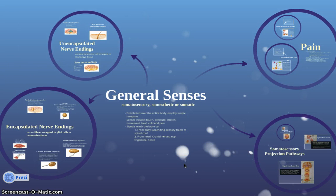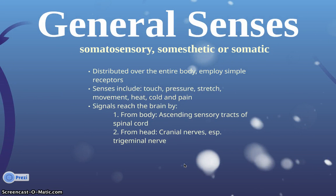I'm doing my presentation on general senses. General senses are also known as the somatosensory, somesthetic, or somatic senses. The receptors for the general senses are relatively simple in structure and physiology, and they're distributed over the entire body. The senses include touch, pressure, stretch, movement, heat, cold, and pain. Signals reach the brain from the body via ascending sensory tracts of the spinal cord, and from the head via the cranial nerves, especially the trigeminal nerve.